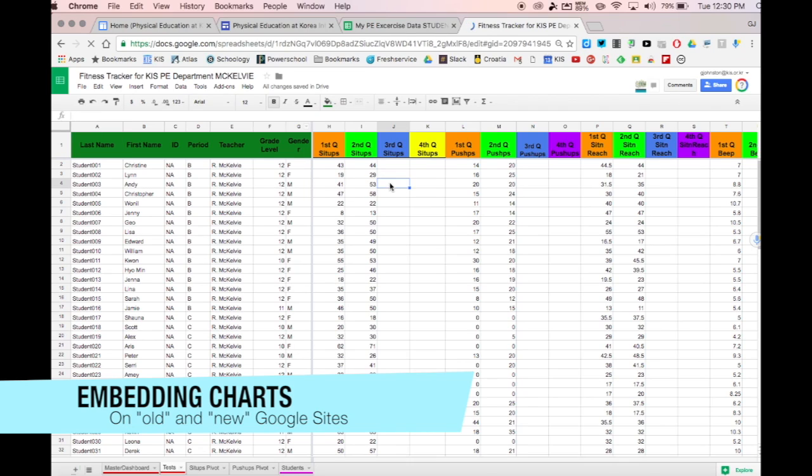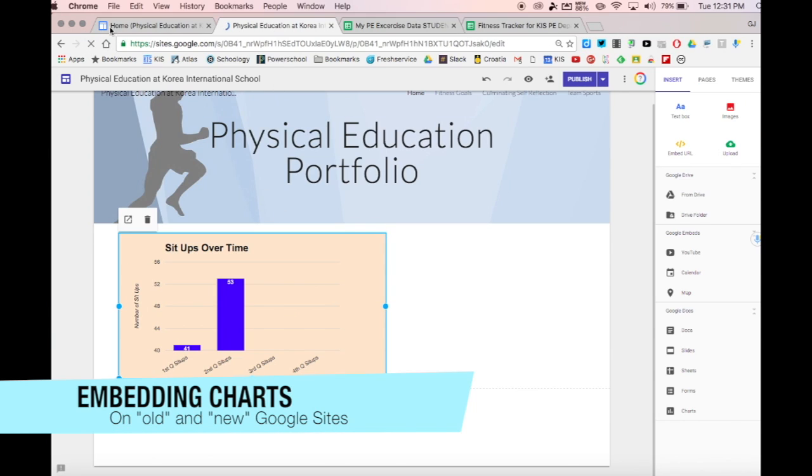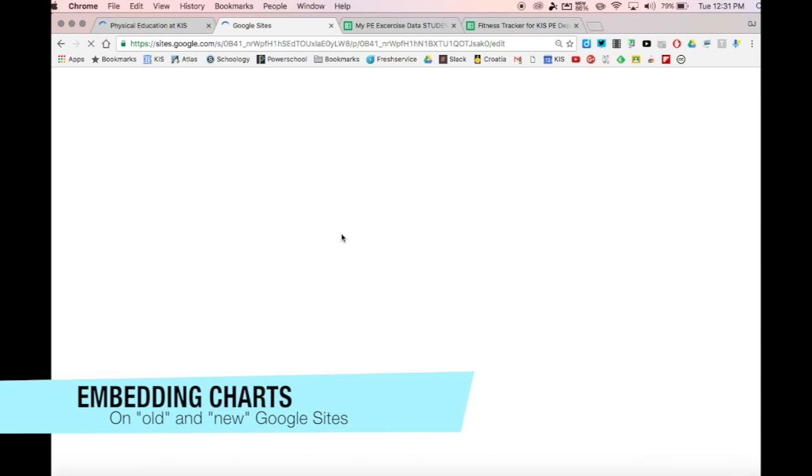So here's Andy, and let's say that Andy by third quarter does 60 sit-ups. If I go over here to Andy's data, we can see that this bar chart is already updated. And if I just refresh my web page here and also here, we'll see that the charts are also reflected in Andy's portfolio.